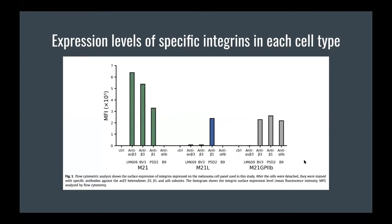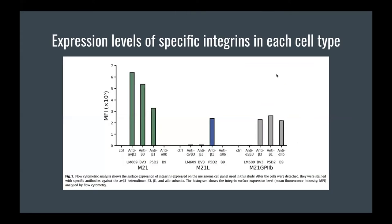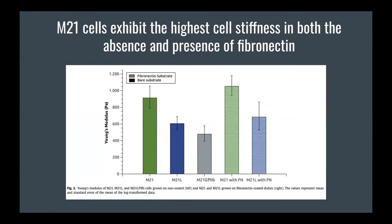MFI refers to mean fluorescent intensity. They used that to show that these antibodies bound the receptor itself, so it's present and fluorescing. This figure is just showing that the specific cell lines they mentioned are the actual cell lines they used — no real new information other than confirming what they said they were using.